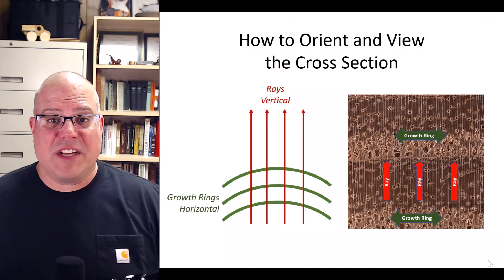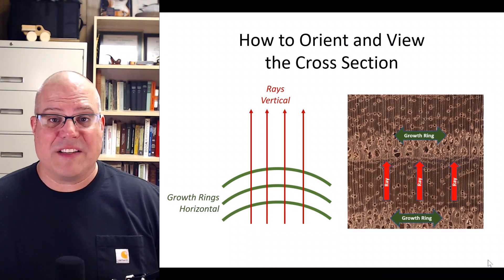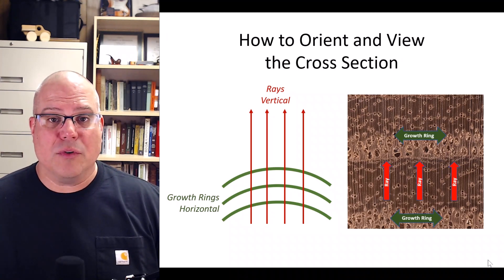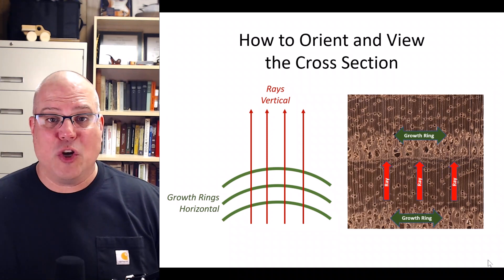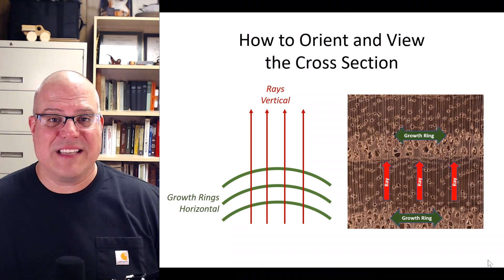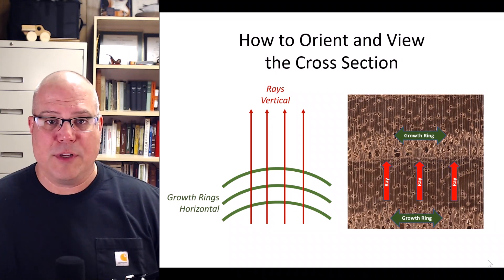As we suggested in previous videos, please remember when you view your wood specimens under a hand lens to orient them with the rays running vertically and the growth rings running horizontally. This will make it easier to compare them to the images you see in my slides and your wood anatomy reference book. All references to vertical and horizontal in my videos will assume this same ray and growth ring orientation.